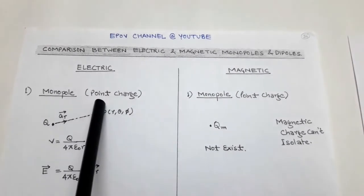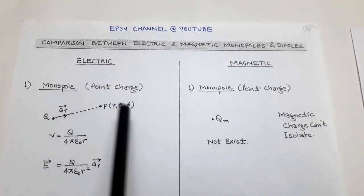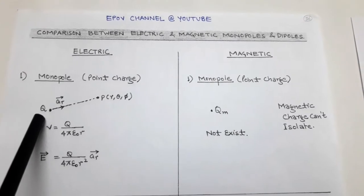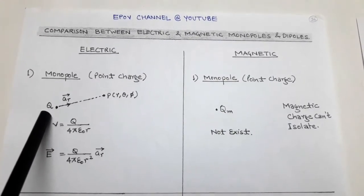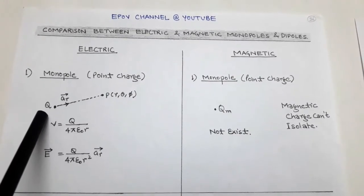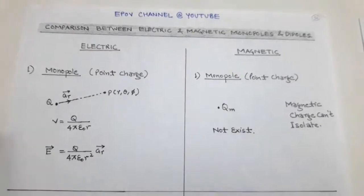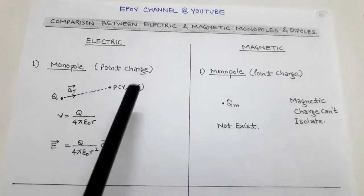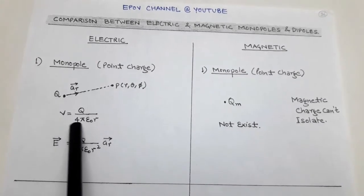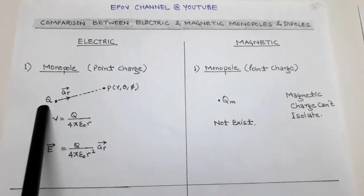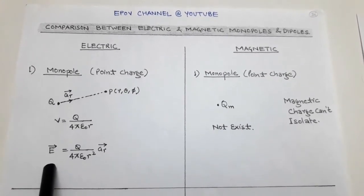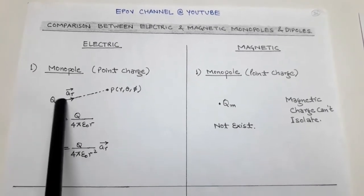Monopoles means single pole. In case of electrostatics, there is a monopole because we consider a point charge. A point charge is a single charge and it acts as a monopole. There is a monopole Q, and due to this Q, there is an electric field at any point P and we can also determine the potential. The monopole has a potential equal to Q upon 4 pi epsilon 0 r, and electric field intensity E vector equals Q upon 4 pi epsilon 0 r squared in the direction of unit vector r.